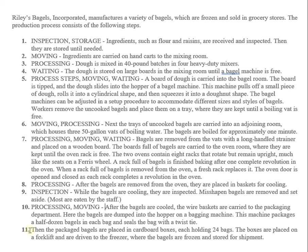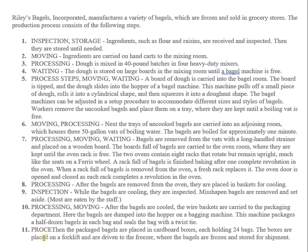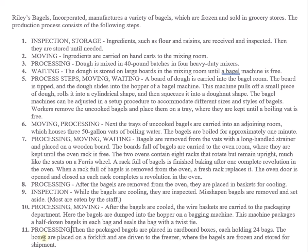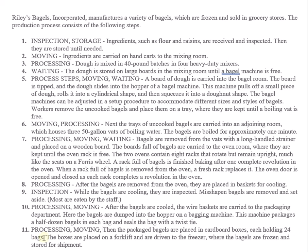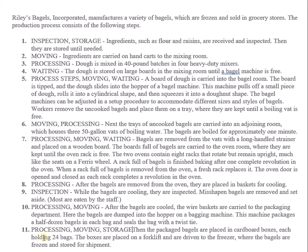Step eleven: packaged bagels are placed in cardboard boxes, and the boxes are placed on a forklift driven to the freezer where they're frozen and stored until shipped. Freezing is part of the process, so step eleven involves processing, moving, and storage. Storage appears in step one and step eleven.